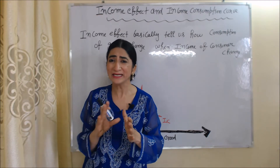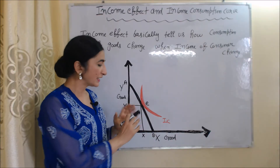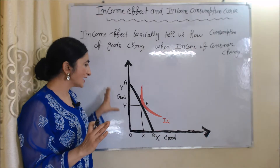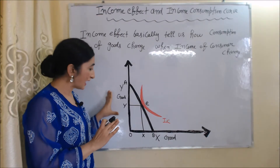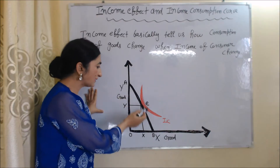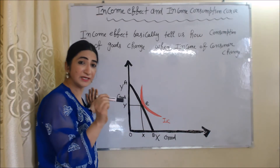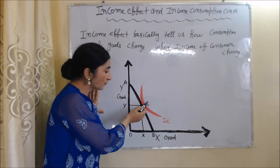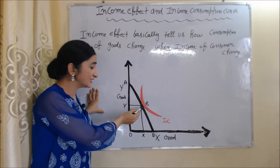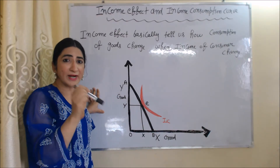We can clearly understand income effect with the help of this diagram. On the x-axis we have X good and on the y-axis we have Y good. Here X and Y are both normal goods. This black line AB is our budget line, and the red IC is our indifference curve. At point E, the budget line touches the indifference curve, so E is the consumer equilibrium point.